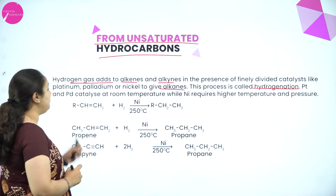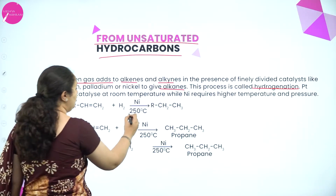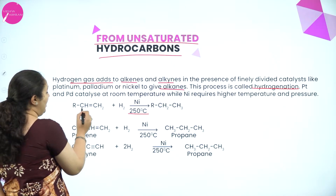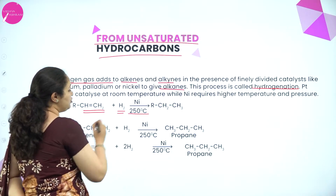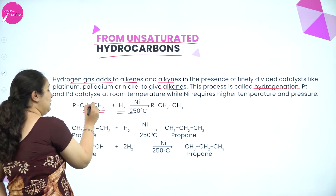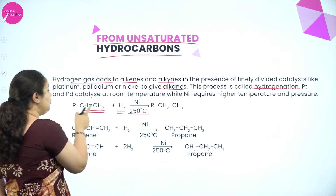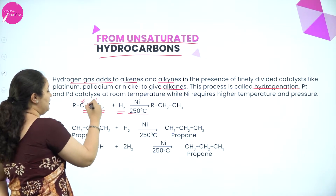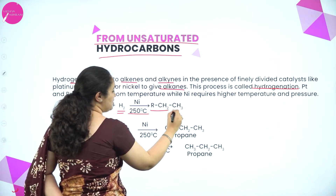When we are using platinum and palladium catalyst, we can do it at room temperature, but if you are using nickel catalyst you have to heat it to 250 degrees Celsius. For example, RCH=CH₂ has a carbon-carbon double bond; hydrogen is added. One bond is broken and hydrogen is added to both carbon atoms, so you get RCH₂–CH₂.